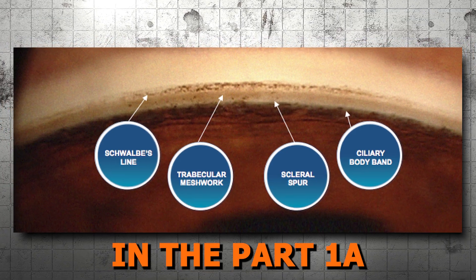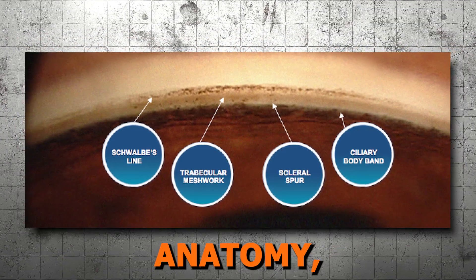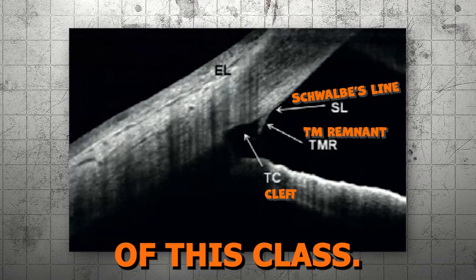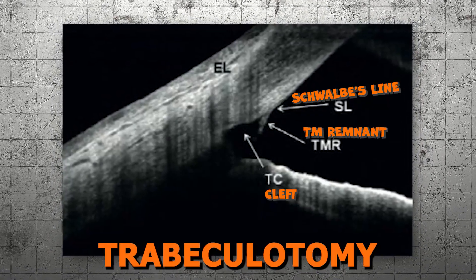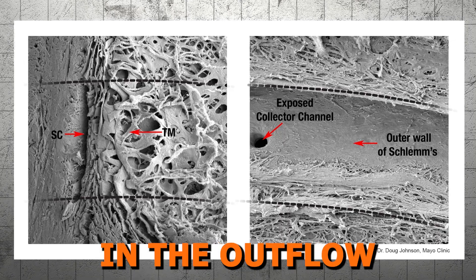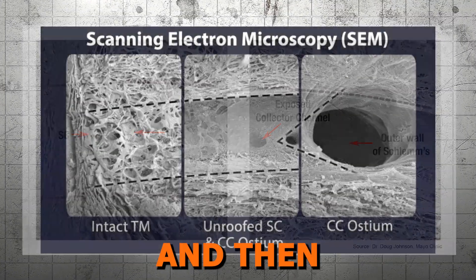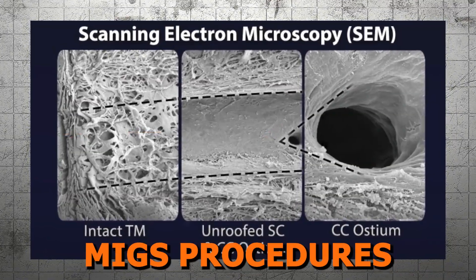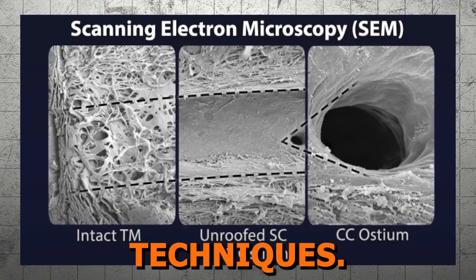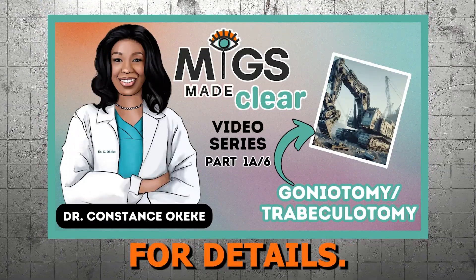Remember, in the Part 1a video, we reviewed angle anatomy, discussed the mechanism of action of this class — goniotomy and trabeculotomy — how the areas of resistance in the outflow system are affected, and then we went into some detail on the available MIGS procedures within the goniotomy techniques. Refer to that video for details.